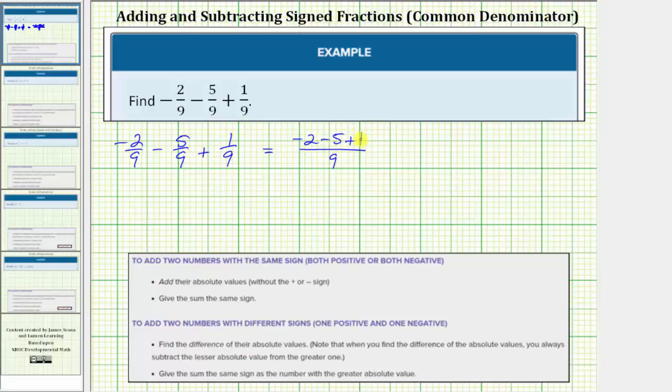Now let's work on simplifying the numerator. Because subtracting a positive is the same as adding a negative, let's write minus five as plus negative five. So the numerator can also be written as negative two plus negative five plus one.